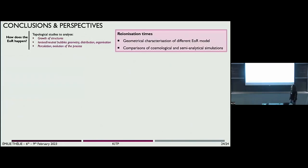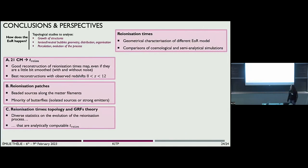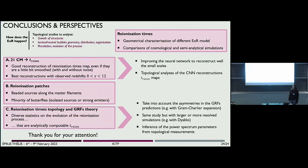So, the reionization times maps are really interesting because they have a lot of information within them. We have access to a lot of things about the growth of structures, the bubbles, the percolation, and we can reconstruct them from 21-centimeter observations. And as they are nearly Gaussian fields, we have direct analytical access to all of these measurements I've shown before. In the future, there is a lot we want to do: improve our neural network reconstruction to also reconstruct the small scales, take into account asymmetries in the Gaussian predictions, and do the same kind of study with more resolved simulations, for example with Diablo. Thanks for your attention.